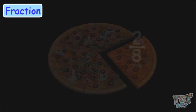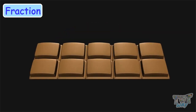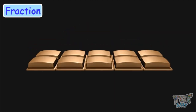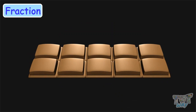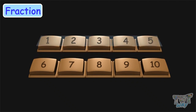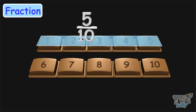Here we have a chocolate, and it is divided into ten pieces or ten equal dividings. Now, if you take five pieces from this chocolate, you have taken five by ten.